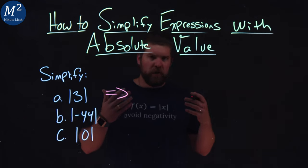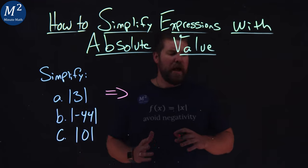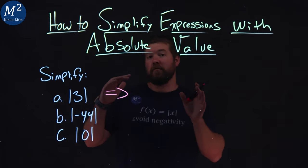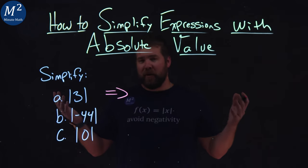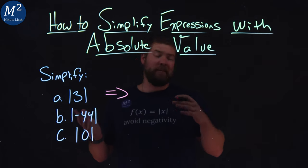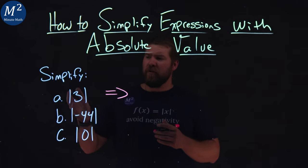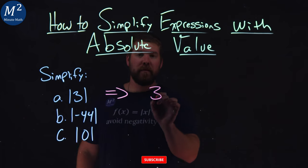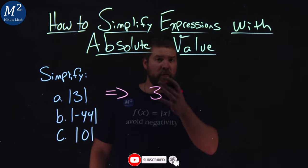What is the absolute value of three? Well, the absolute value tells us really what's the distance that number is from zero, or you can always think of it as if it's positive, say it's positive. If it's negative, make it positive. So the distance that three is from zero is three on the number line. So the absolute value of three is three.